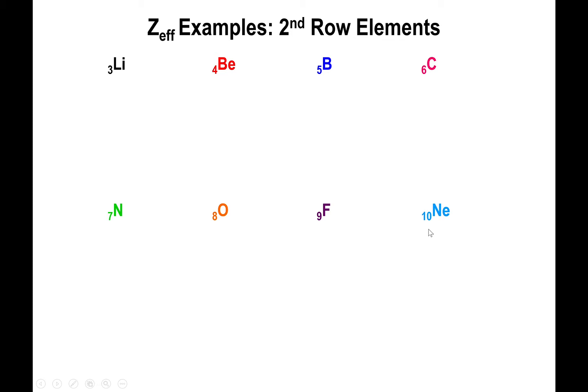First, we need to write out the electron configurations of each one of these elements. For lithium, that's 1s2 2s1. For beryllium, we have 1s2 2s2. For boron, on top of 1s2 2s2, we add 2p1, and then we go to 2p2 for carbon, 2p3 for nitrogen, 2p4 for oxygen, 2p5 for fluorine, and 2p6 for neon. This is the regular electron configuration.